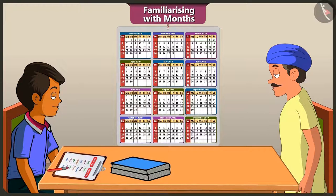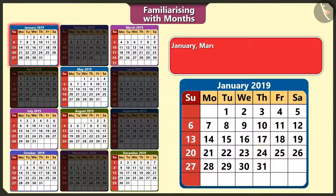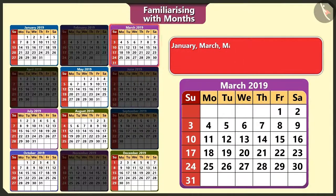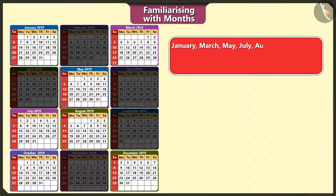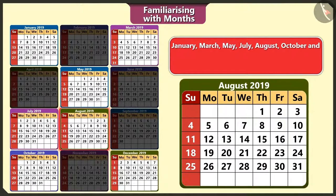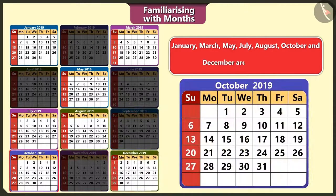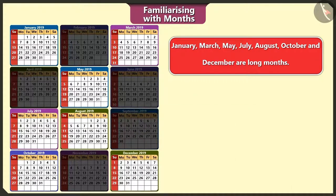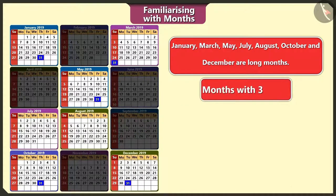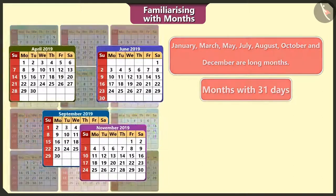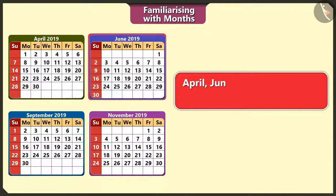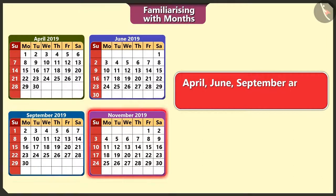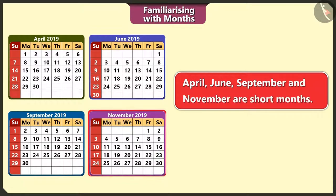The number of days in each month varies. January, March, May, July, August, October and December are the long months — there are 31 days in these months. April, June, September and November are the short months — there are 30 days in these months.